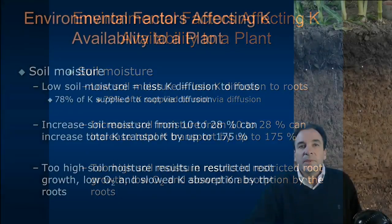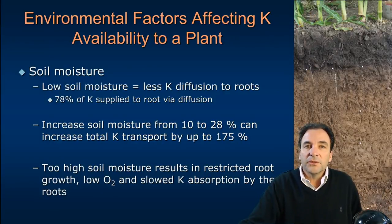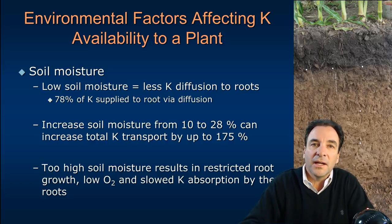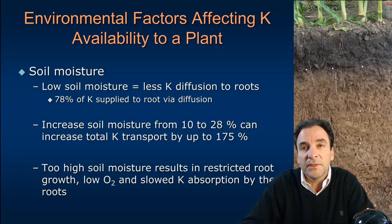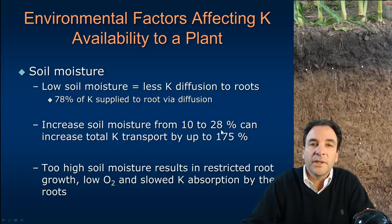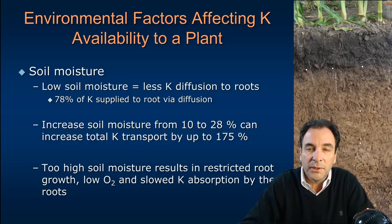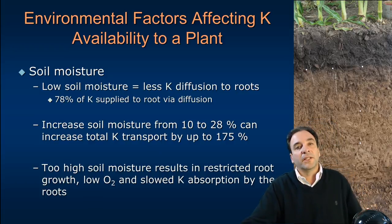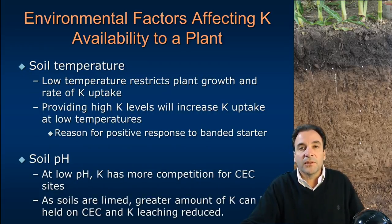Environmental factors affecting potassium availability: soil moisture influences potassium uptake. Under dry soil conditions, there is less diffusion of soluble potassium to the roots — diffusion is the major form of uptake of potassium into plants, so dry conditions lead to reduced uptake. Increasing soil moisture from 10% to 28% can increase potassium transport in the soil solution to the roots by up to 175%. Too much moisture, on the other hand, can result in restricted root growth, low oxygen, and slow potassium absorption. Saturated and cold soils inhibit potassium uptake by plants.